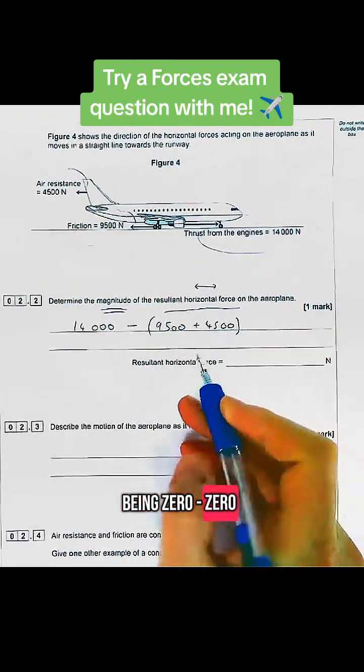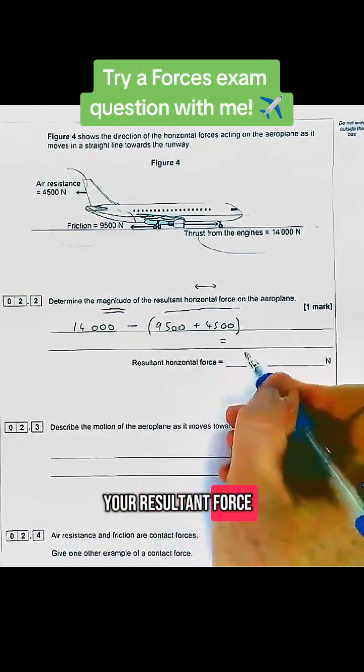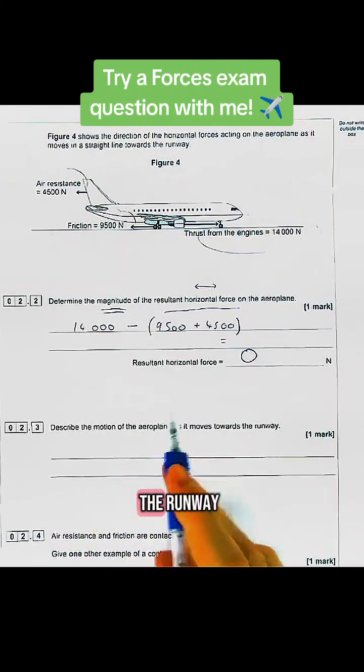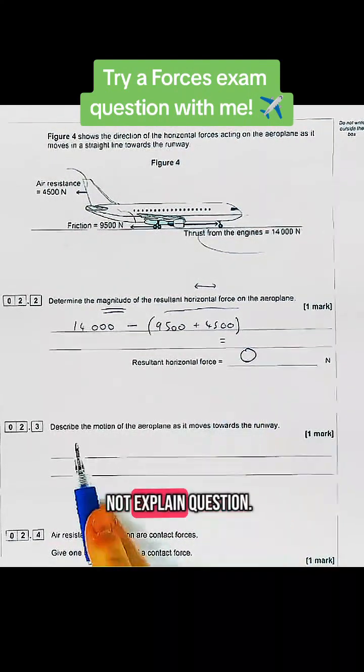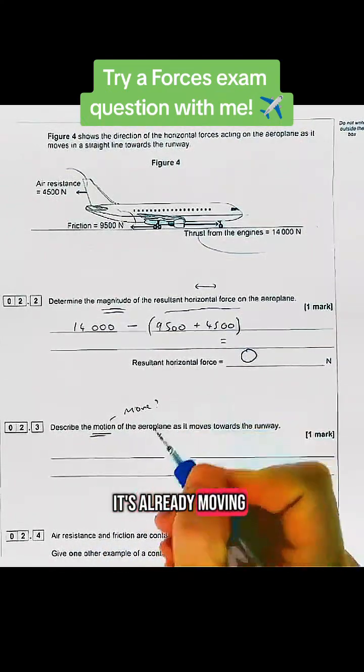Zero resultant force for that question. Now, as it's zero resultant force, we can describe the motion - how does it move as it goes along the runway? It's just a describe question, not an explain question. We should know it's already moving, so it's not stationary.